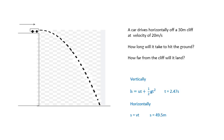And then horizontally, now that we know the time, we can just do distance is velocity times time, using the velocity of 20 meters per second. And that gives us 49.5 meters.